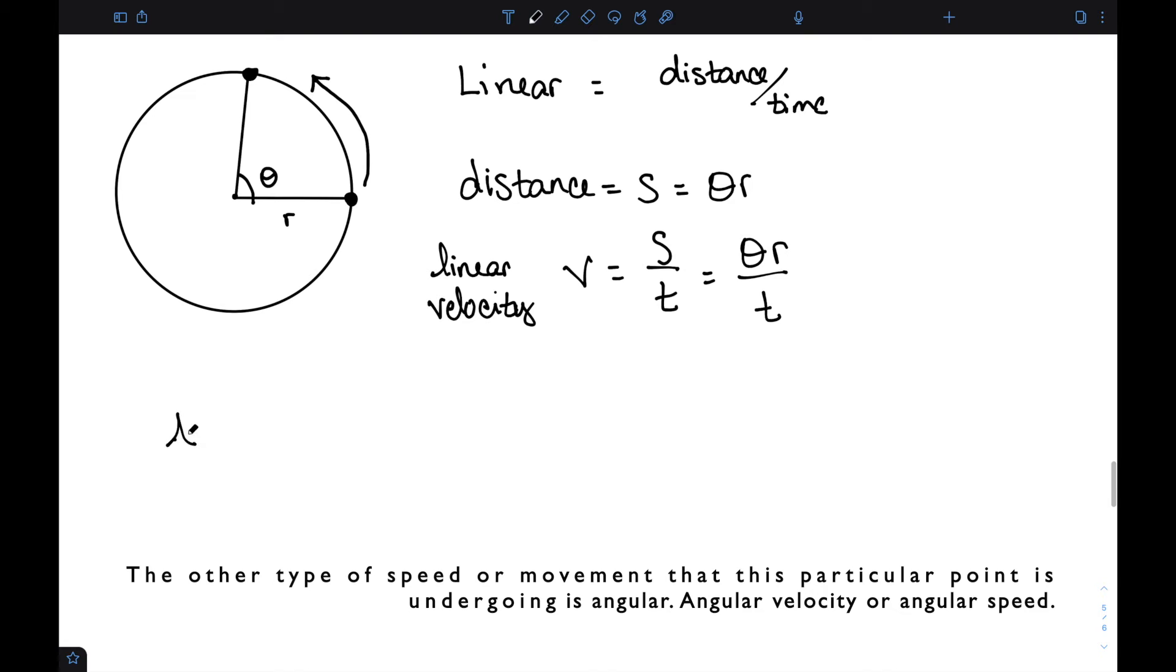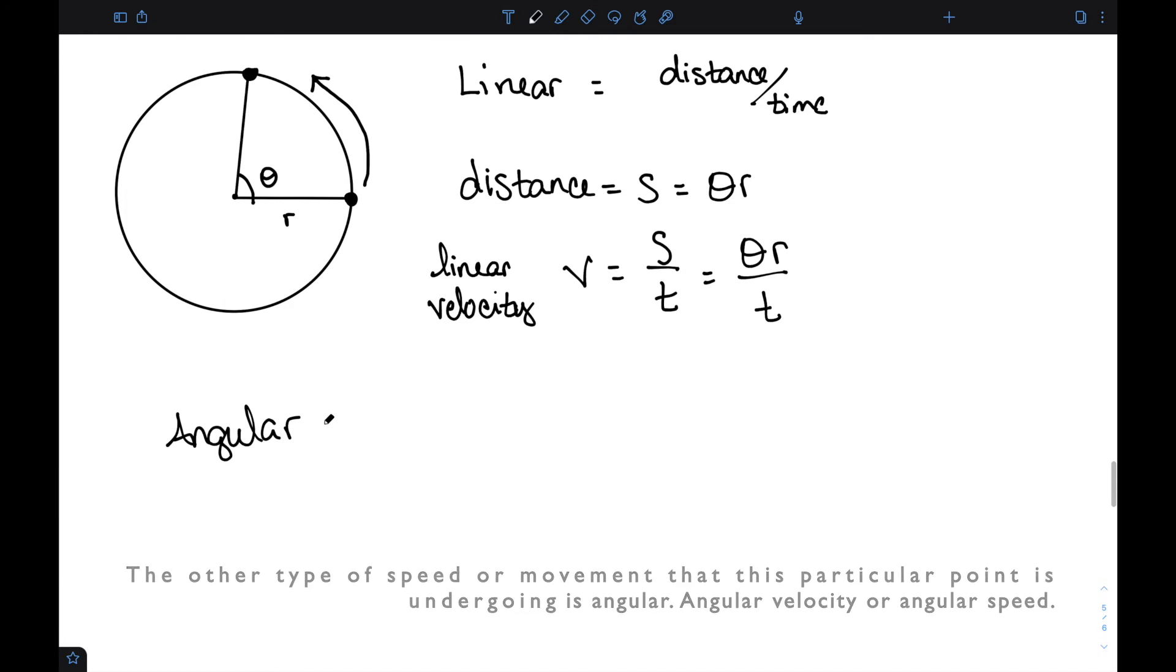The other type of speed or movement that this particular point is undergoing is angular velocity or angular speed. This looks at how far it's gone around the circle, so it looks at how many turns of the circle. It looks at the revolutions. In a given time, how many times does the circle spin around?